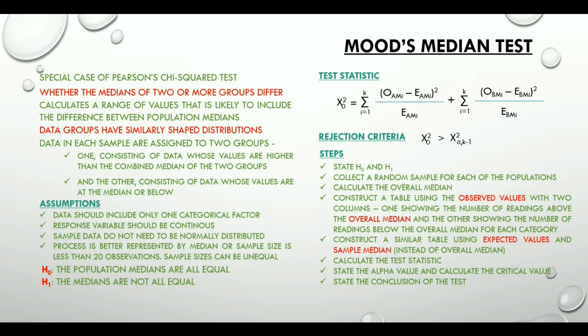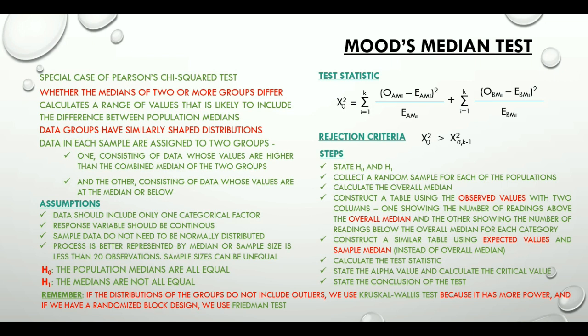A super important point to remember here is that if the distributions of the groups do not include outliers, we use Kruskal-Wallis test. And if we have a randomized block design, we use a Friedman test.